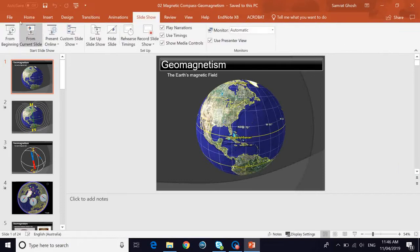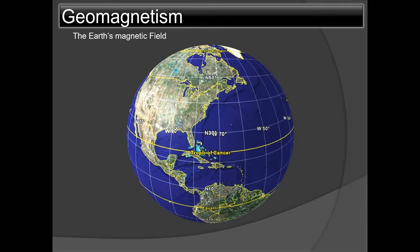This video is number 2 in the series on the magnetic compass, and it focuses on geomagnetism — the Earth's magnetic field. The first video, whose link will be provided, talked about a freely suspended magnet on the Earth's surface. This video covers the Earth's magnetism experienced by a freely suspended magnet, and links to the other videos in the series covering compass parts and deviation will also be provided.